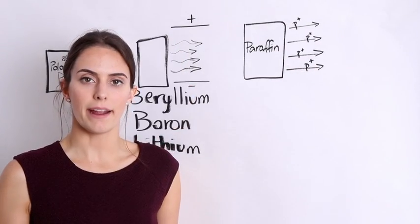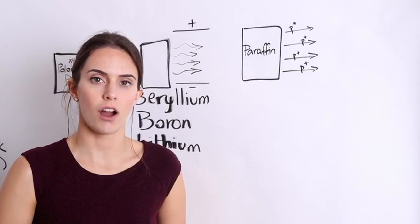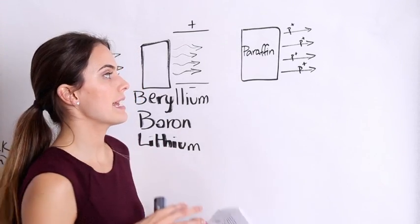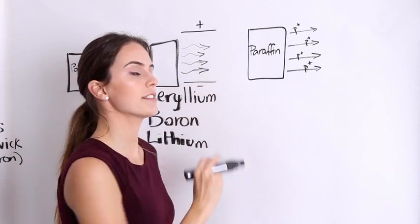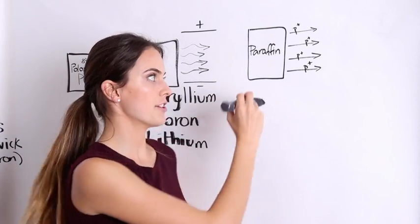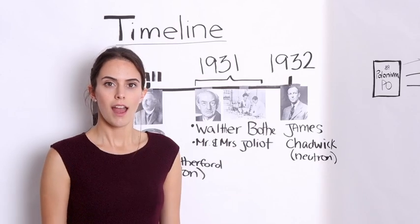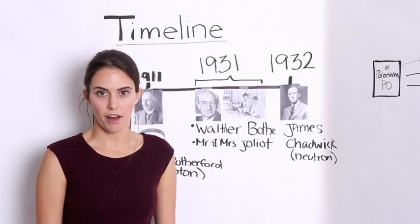And why paraffin? Because paraffin is a hydrogen containing compound, therefore making it very dense with nuclei so that the rays have more chances of hitting nuclei and shooting out a proton.